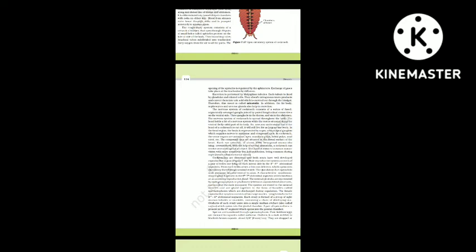In the head region, the brain is represented by the supra-esophageal ganglion, which supplies nerves to antennae and compound eyes. The sense organs of cockroach are antennae, compound eyes, maxillary palps, labial palps and anal cerci. The compound eyes are situated on the dorsal surface of the head. Each eye consists of about 2000 hexagonal ommatidia (singular: ommatidium). With the help of several ommatidia, a cockroach can receive several images of an object — this kind of vision is known as mosaic vision, with more sensitivity but less resolution, being common during night and hence called nocturnal vision.